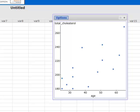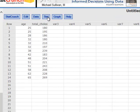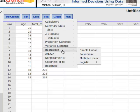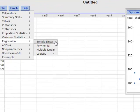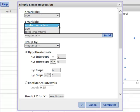At this point, what we're doing is trying to find the equation of the straight line that would serve as a good model for this linear relationship. Here's how we're going to do it. We're going to go to Stat, Regression, Simple Linear. Our x variable is age, the y variable is total cholesterol. At this point we don't need to change any of these other options, so we'll click Compute.